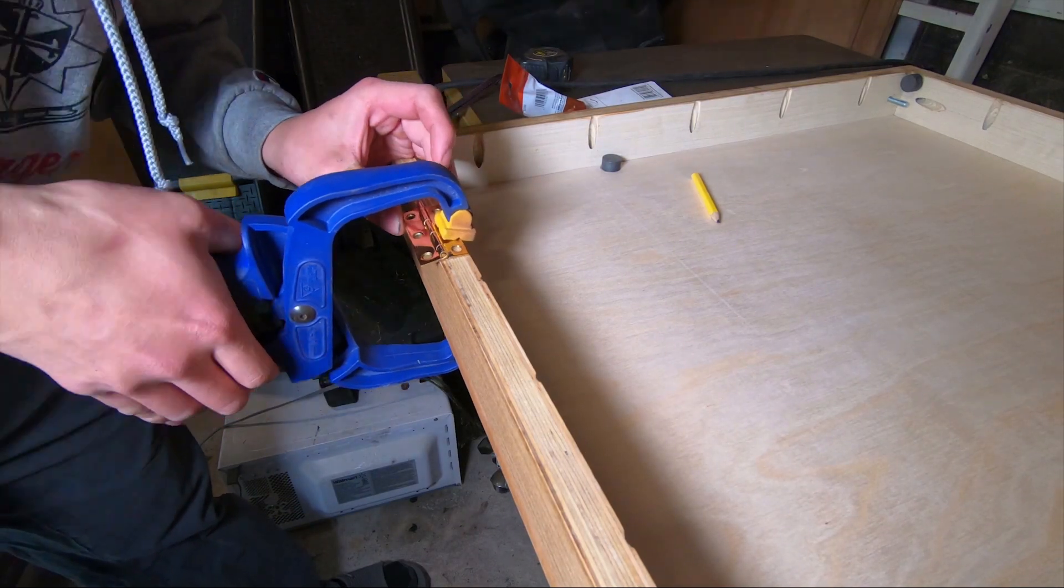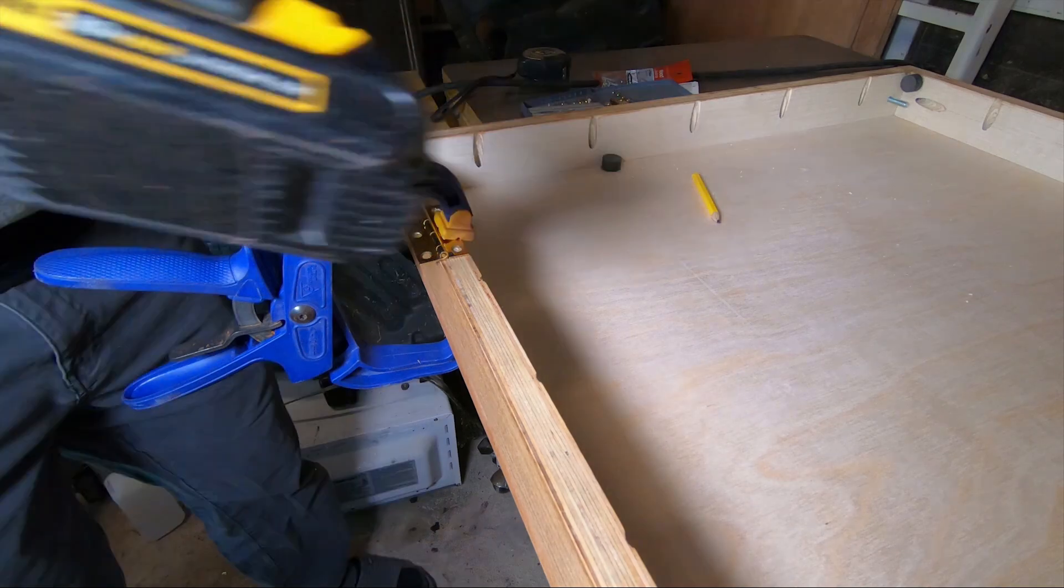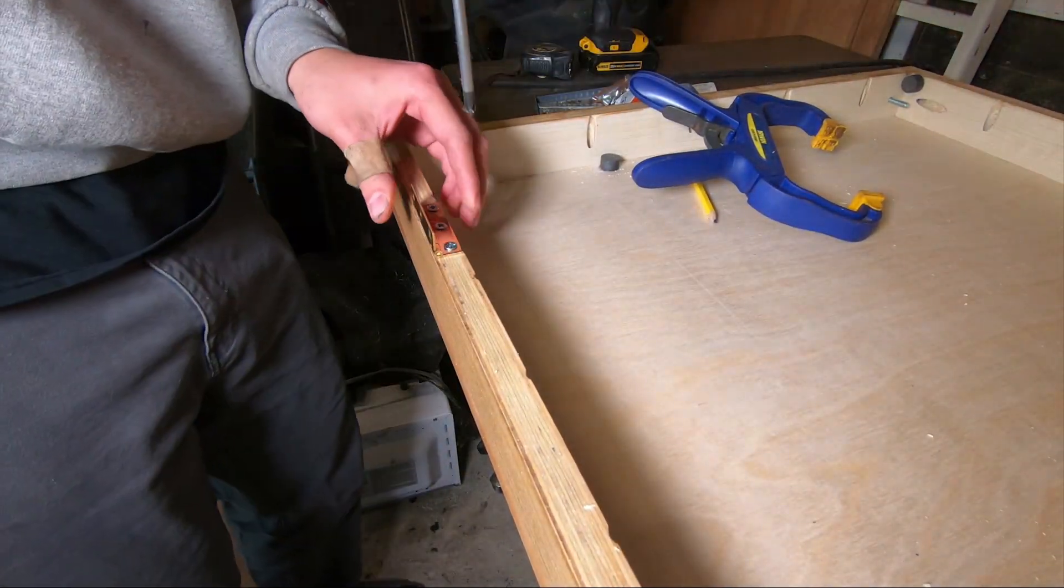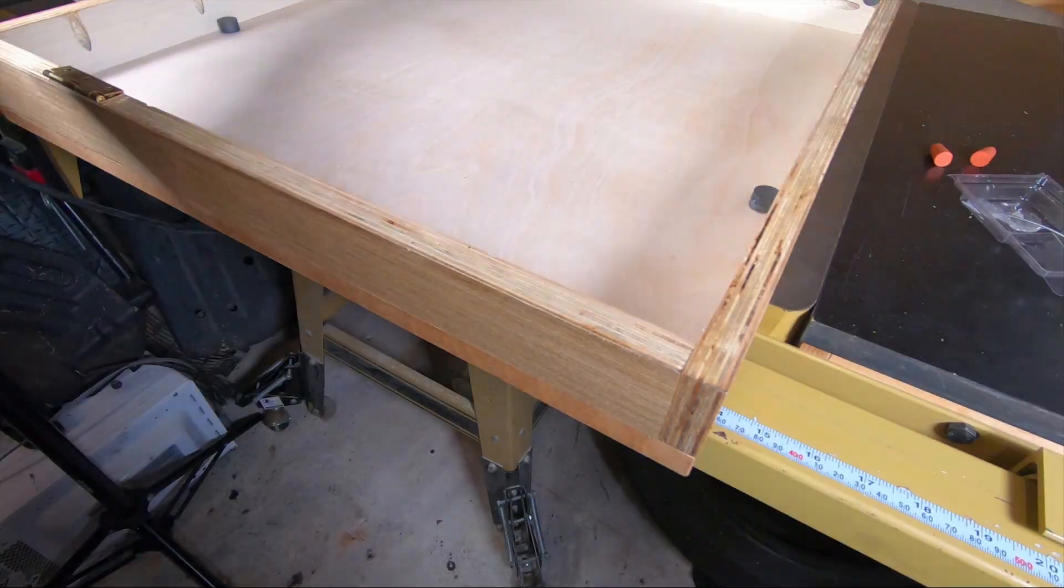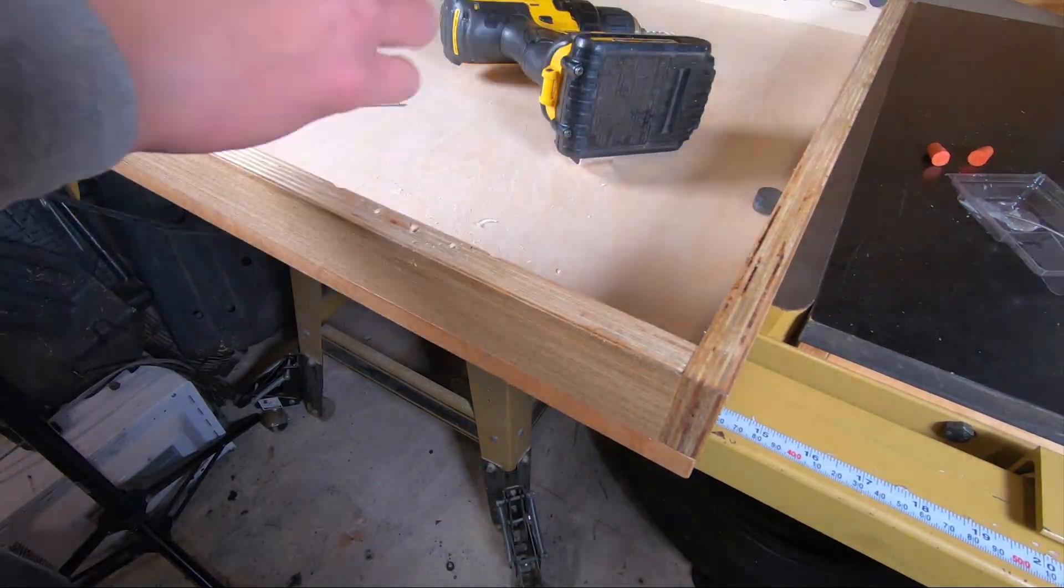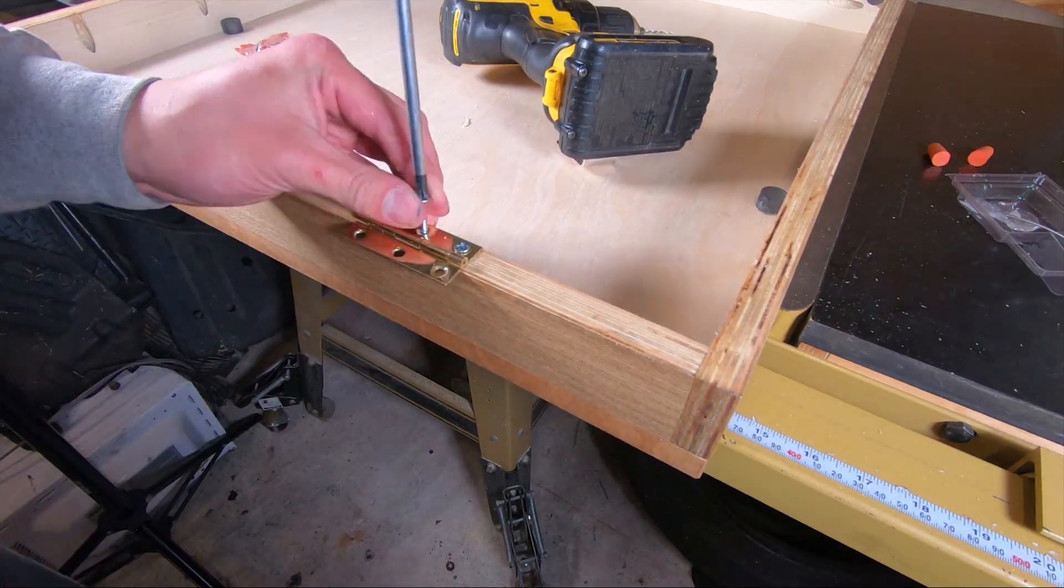All right, last step before assembly. We're gonna go ahead and attach these two hinges over here. It's pretty easy to do so. All you have to do is just mark out where you need to put the hinge, pre-drill the holes, and then put in the screws by hand. I do not recommend using a power tool for that.